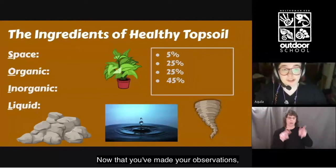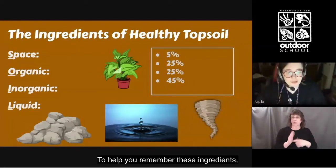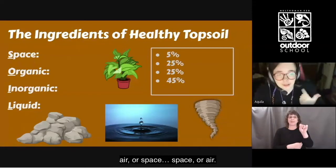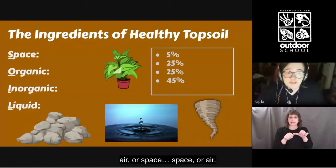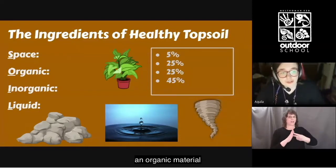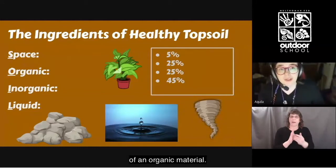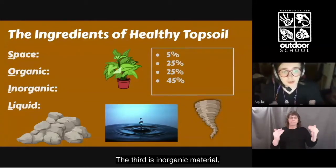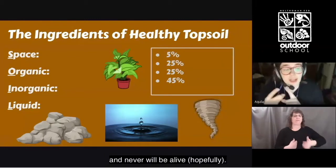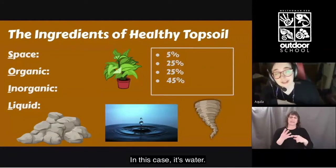Now that you've made your observations, let's take a look at the ingredients of healthy topsoil. To help you remember these ingredients, we've presented them in a way that spells out SOIL. The first ingredient is space or air. The second ingredient is organic material — something that is alive, was alive, or may become alive again; plants are an example. The third is inorganic material, which is the opposite: things that are not alive, never were alive, and never will be alive; rocks are an example. And finally, liquid — in this case, water.